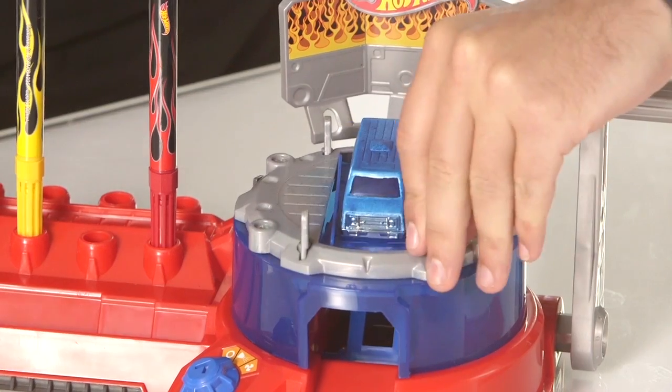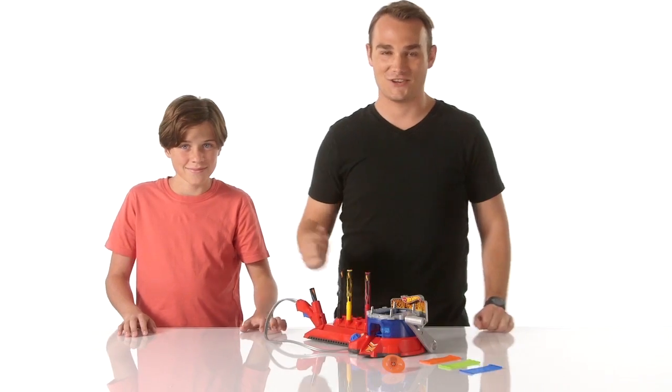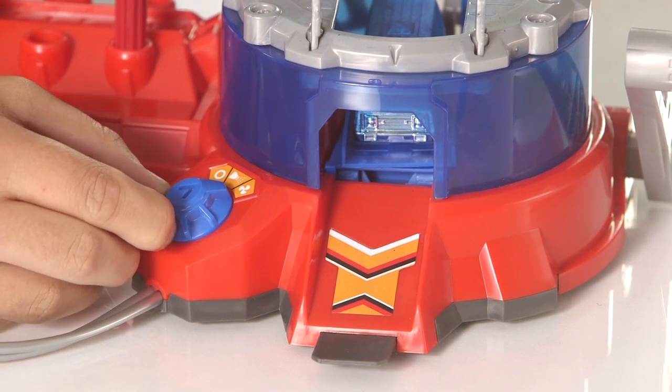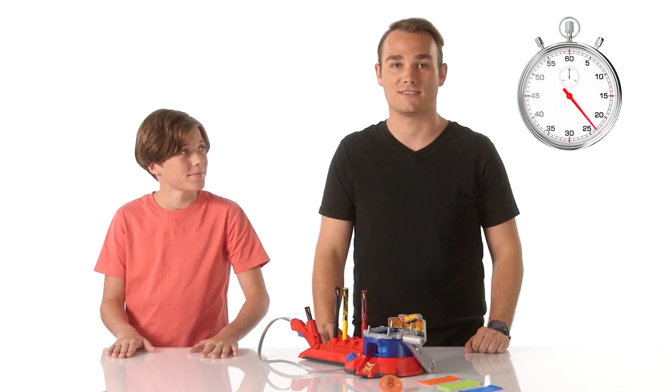Let's rotate it and put it into the drying chamber. Now let's turn this knob to fan mode to start the drying process. Let your car dry for at least 30 seconds.